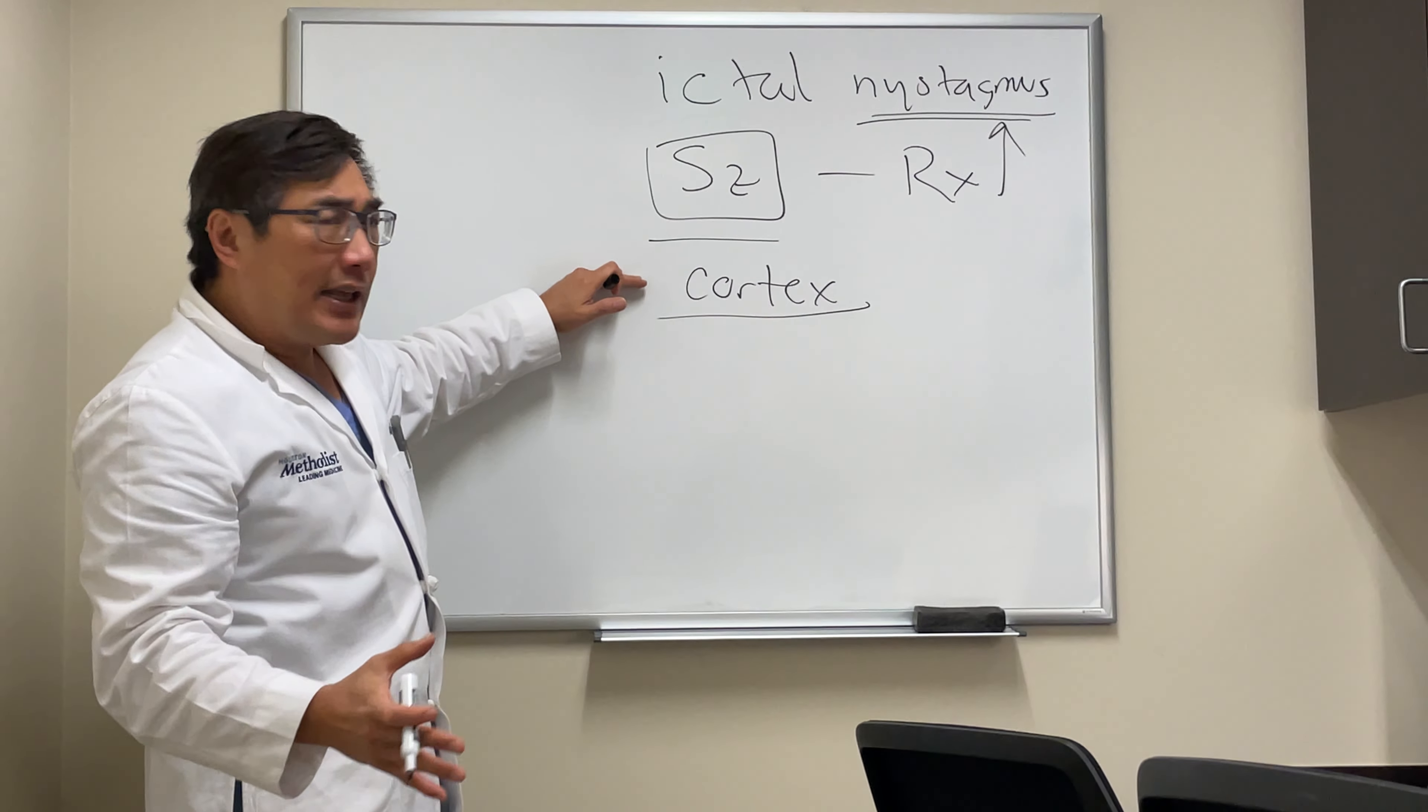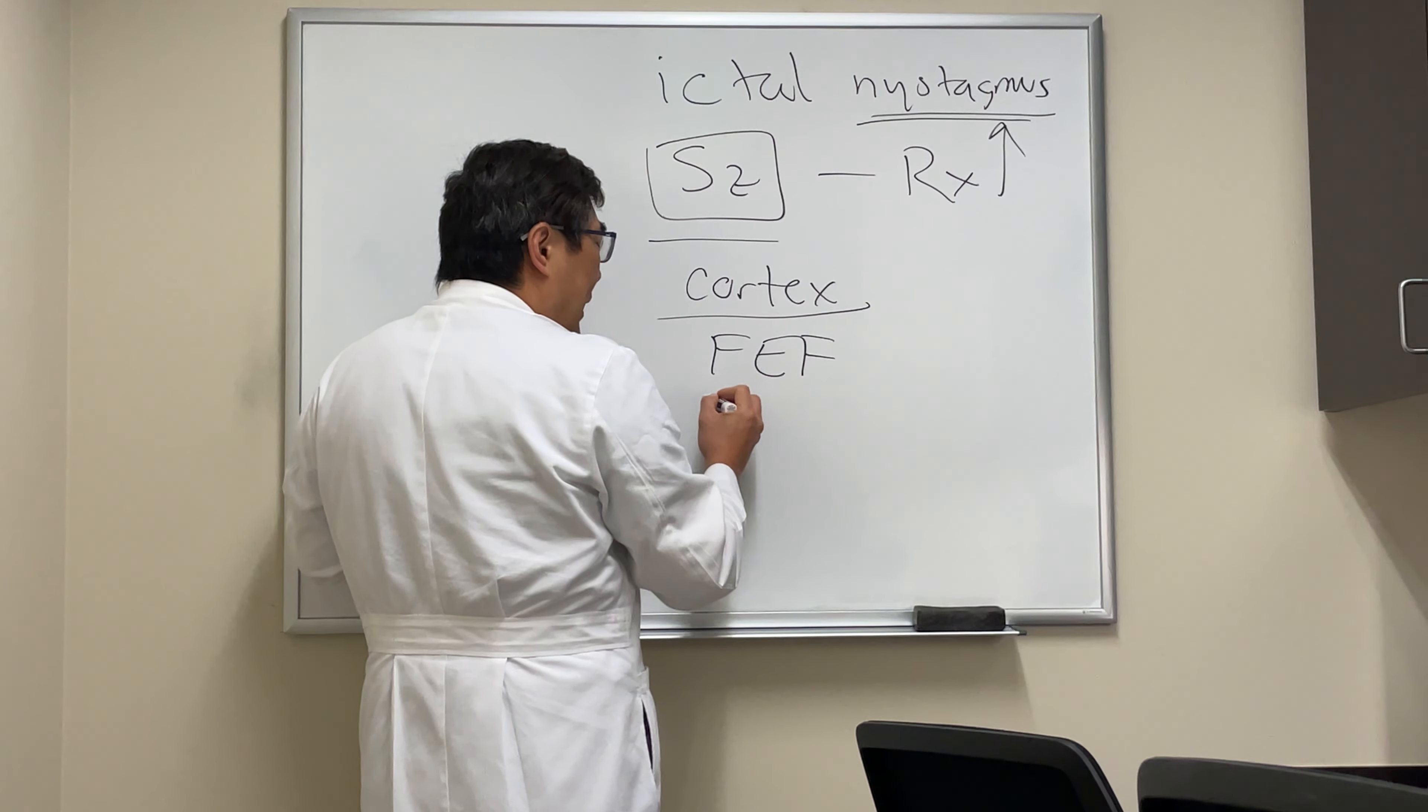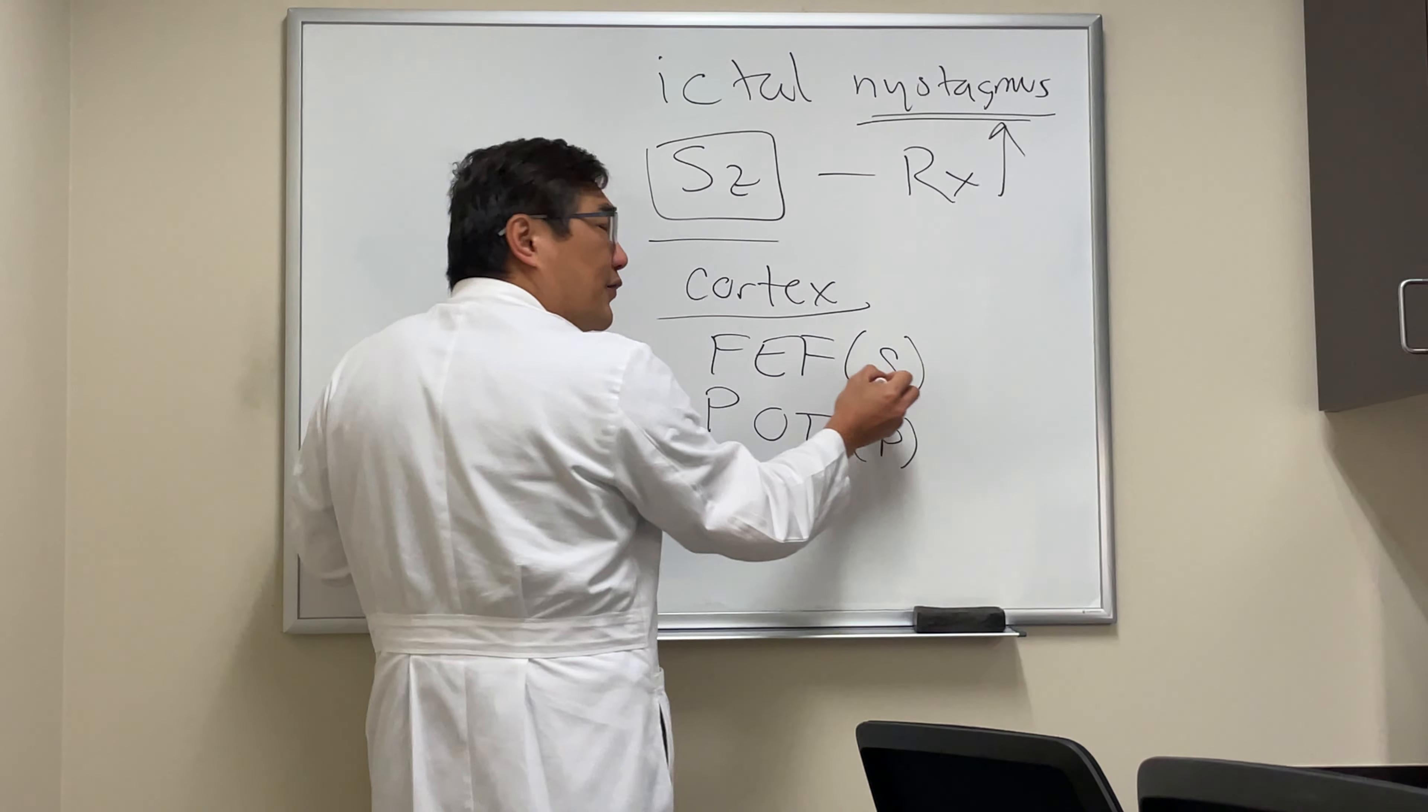And in the ocular motor system, we've got the frontal eye fields and the parietal occipital temporal for the pursuit, and the frontal eye field is for saccade.